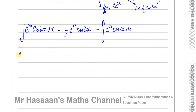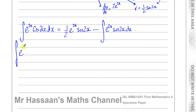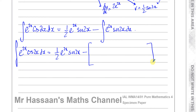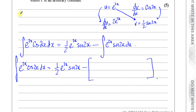I'm going to keep writing the original integral on the left-hand side — you'll see why. So the integral of e^(2x)cos(2x) dx equals (1/2)e^(2x)sin(2x) minus... and now I need to integrate e^(2x)sin(2x) by parts again.